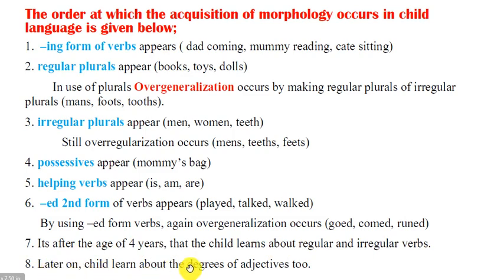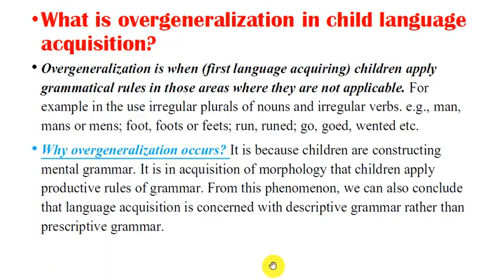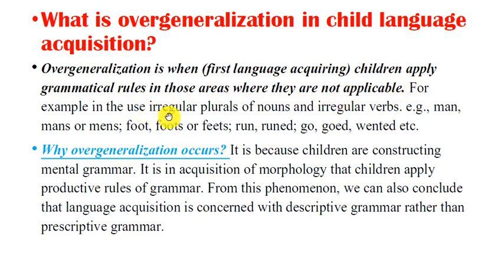What is overgeneralization in child language acquisition? Overgeneralization is when a first-language-acquiring child applies grammatical rules in areas where they are not applicable — for example, in the use of irregular plurals and irregular verbs. Examples include: 'men' becomes 'mans,' 'foot' becomes 'foots' or 'feets,' 'run' becomes 'runned,' 'go' becomes 'goed,' 'went' becomes 'wented.'